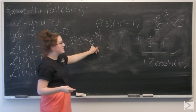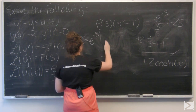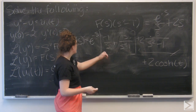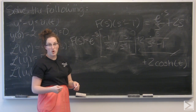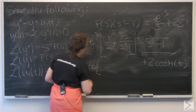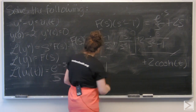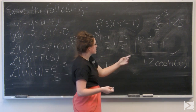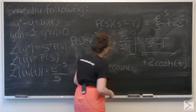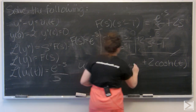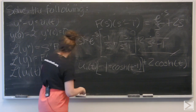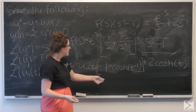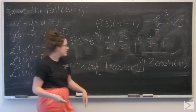Now I'll rewrite that fraction, bringing the e to the negative s back in: negative 1 over s plus s over s squared minus 1. The whole thing is going to be multiplied by a step function u sub 1 of t. Negative 1 over s is just negative 1, and s over s squared minus 1 is hyperbolic cosine — but instead of cosh of t, it's cosh of t minus 1. So our final answer is u sub 1 of t times the quantity hyperbolic cosine of t minus 1, minus 1, plus 2 hyperbolic cosine of t.